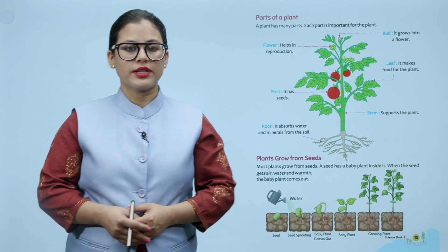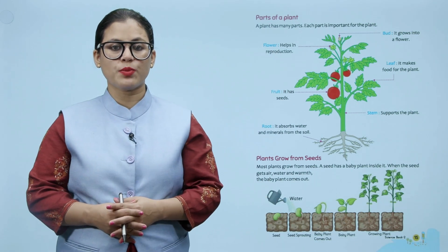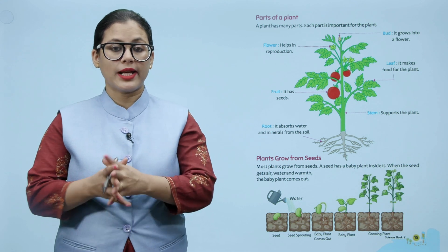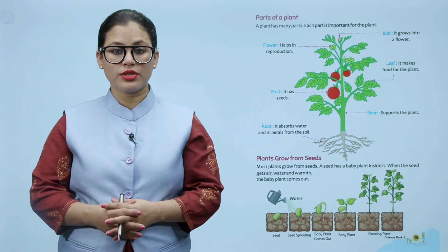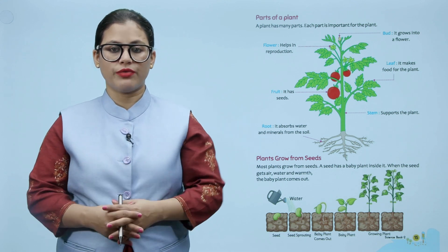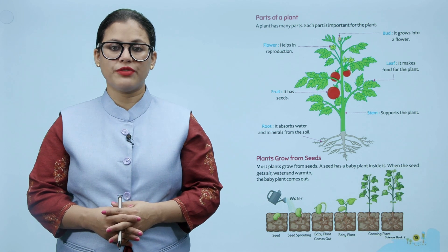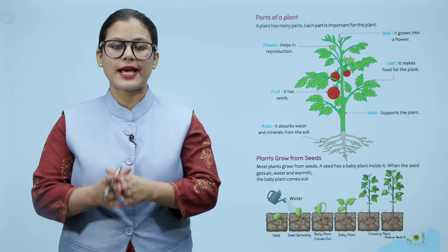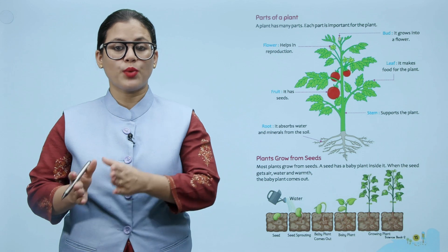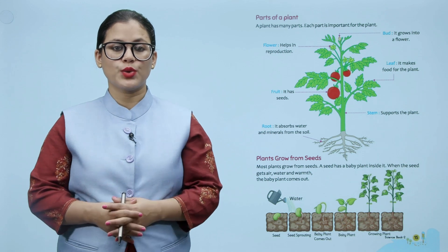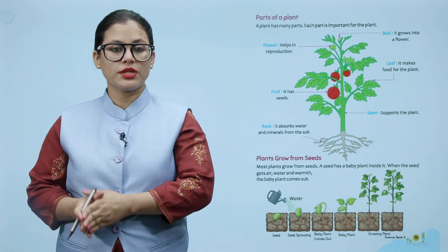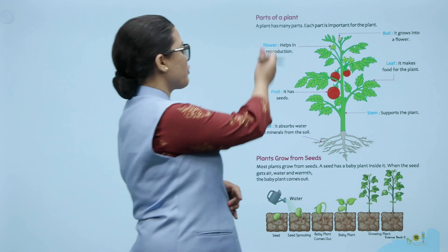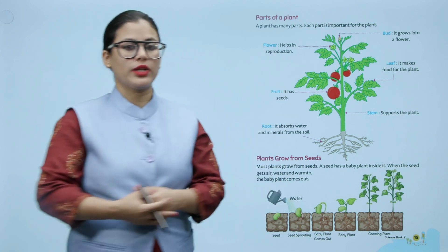Parts of a plant: A plant has many parts. Each part is important for the plant. Flower helps in reproduction. Bud grows into a flower. Leaf makes food for the plant. Fruit has seeds. Stem supports the plant. Root absorbs water and minerals from the soil.